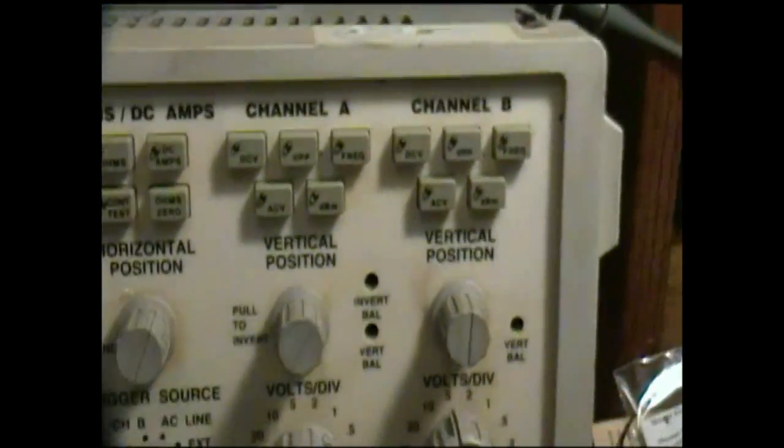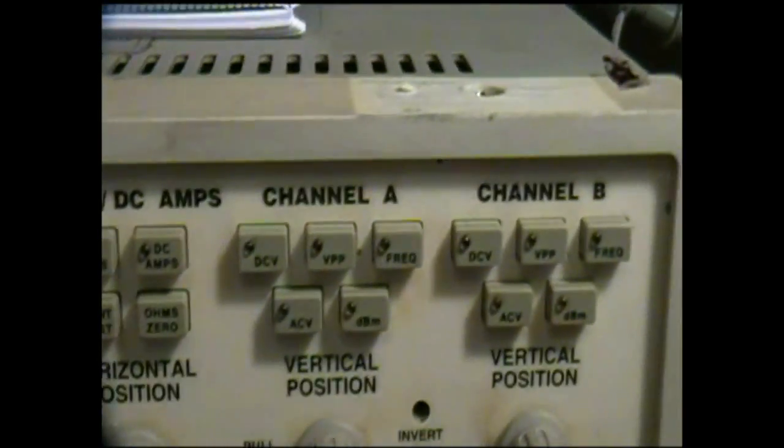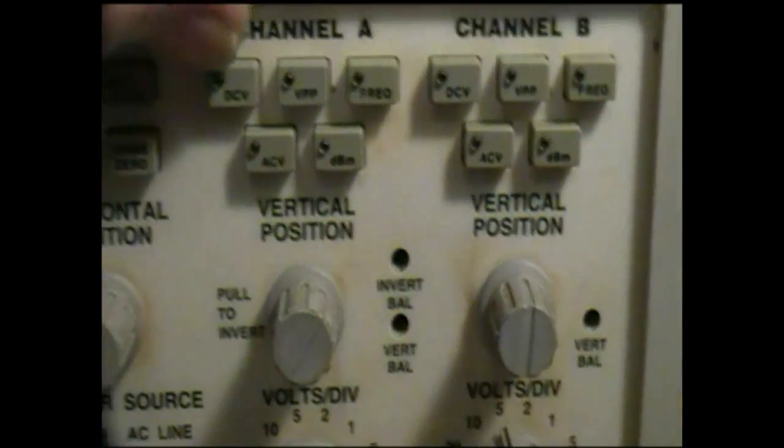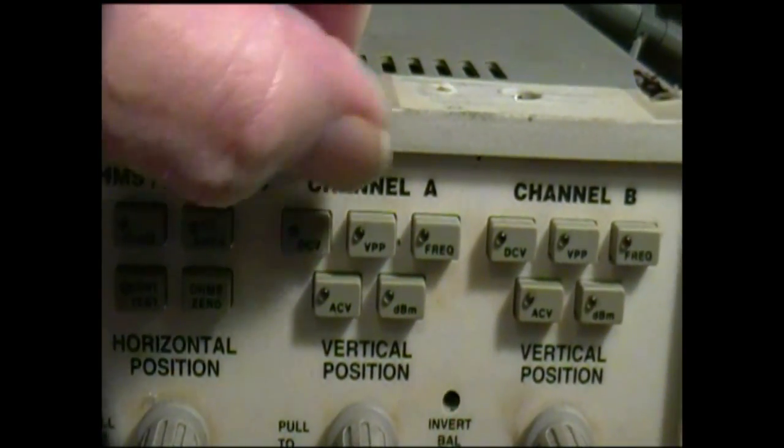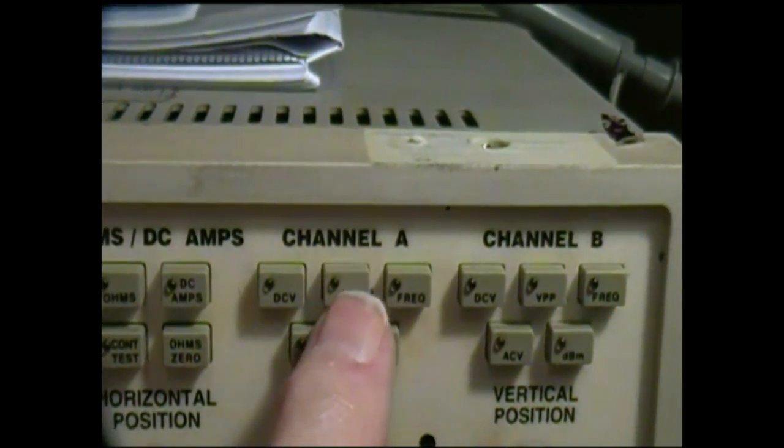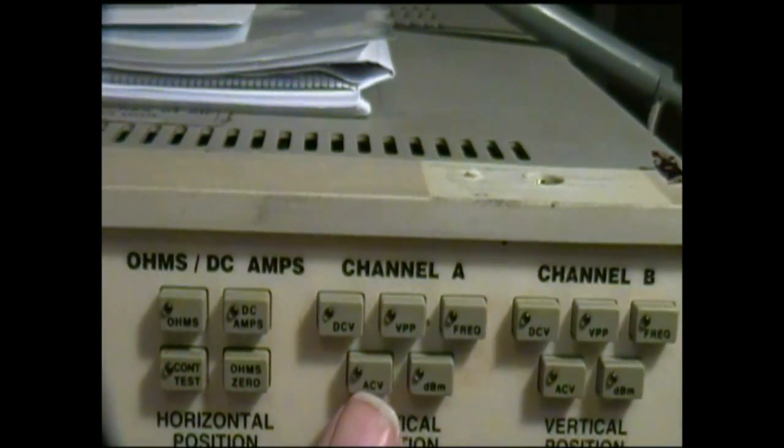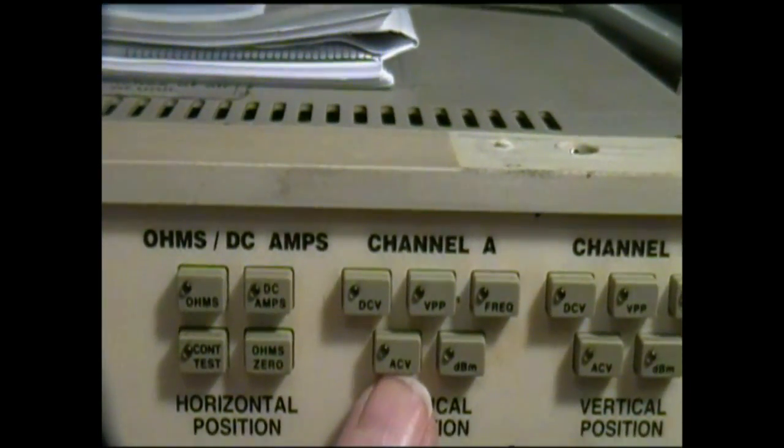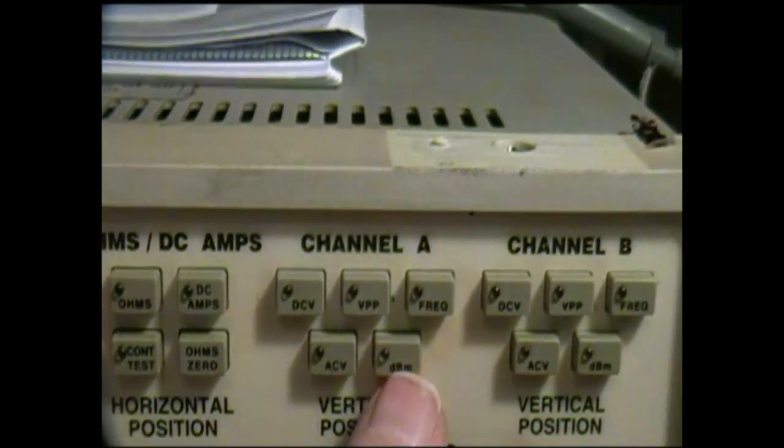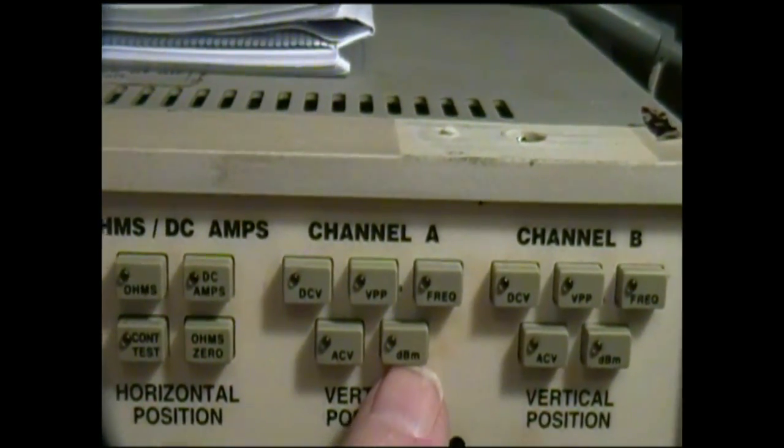You can choose either DC volts or the peak to peak voltage, the voltage of the signal or its frequency, or the AC voltage which essentially is the RMS value if it's a sine wave, or the AC value in dB.